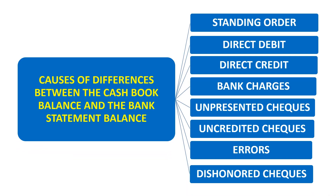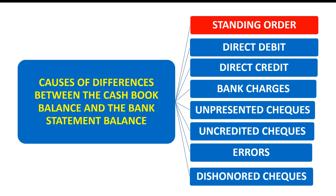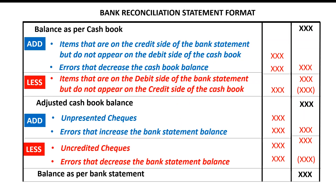Here are the reasons we are going to discuss: standing orders, direct debits, direct credits, bank charges, unpresented checks, uncredited checks, errors, and dishonored checks. On your screen is an alternative format for preparing a bank reconciliation statement. So as I explain the factors that cause differences between the cashbook balance and the bank statement balance, I will be indirectly explaining this alternative approach to preparing the bank reconciliation statement.